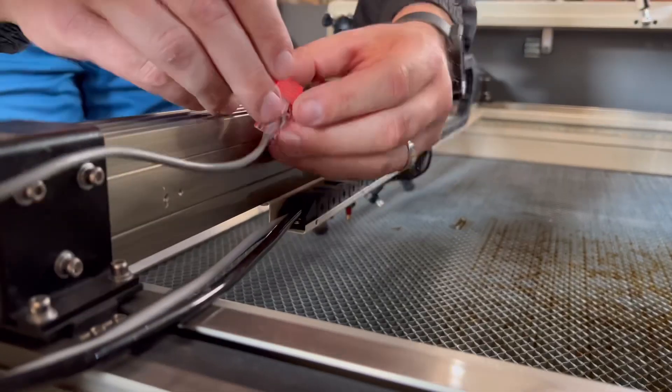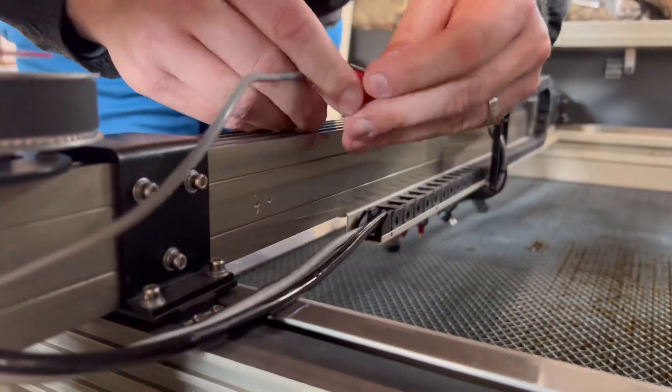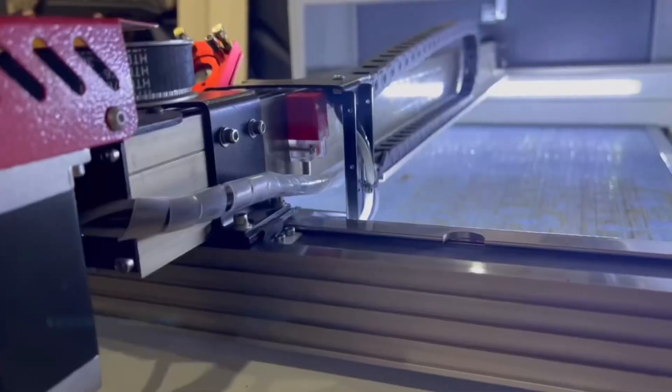Once you do that, plug in the new proximity sensor wire and connect the new proximity sensor to the gantry.